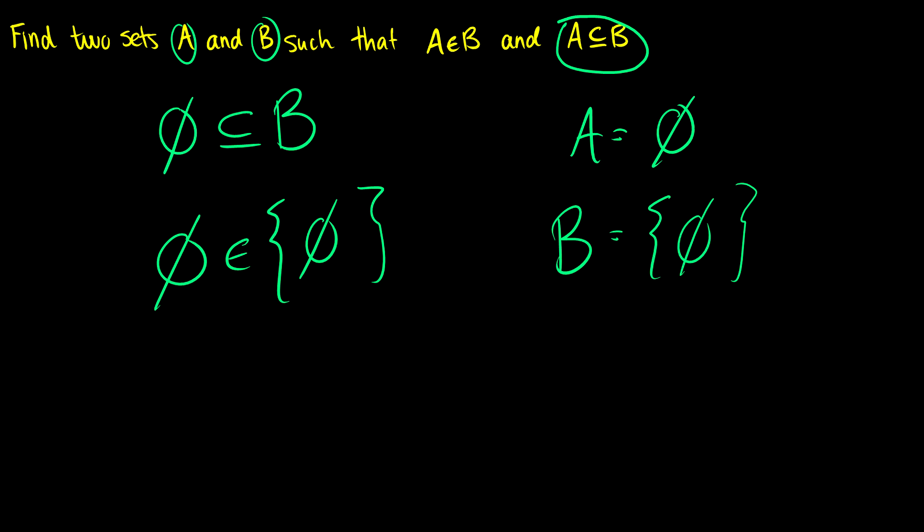So whenever you see these weird conditions where you have both an element and subset, the first thing you should always consider is the empty set. And you should consider some properties related to the subset like what holds for everything. Is there something that is an element of every set? And the answer is no. But there is something that is a subset of every set and that would be the empty set itself.